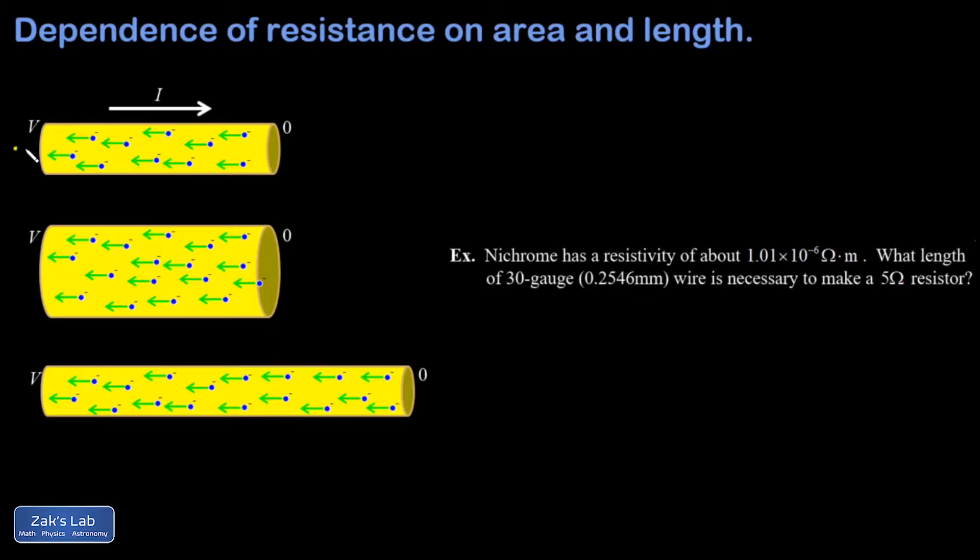These electrons are responding to the presence of an electric field through the conductor that puts an average force on them to the left, and they move to the left with a velocity that's called the drift velocity.